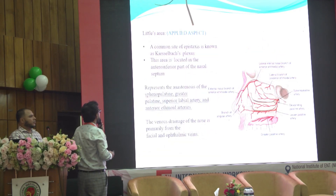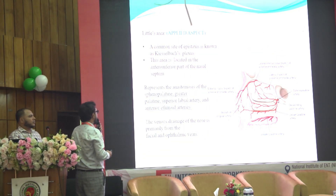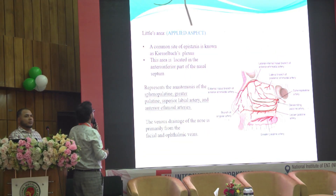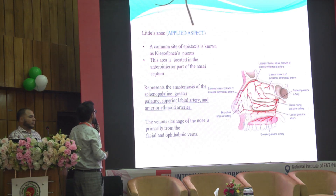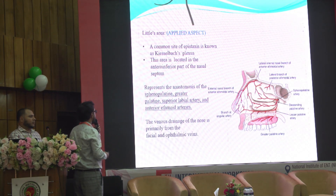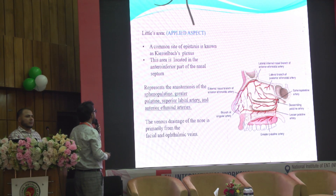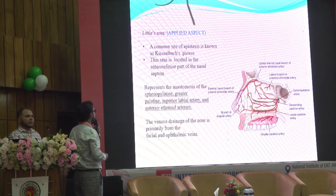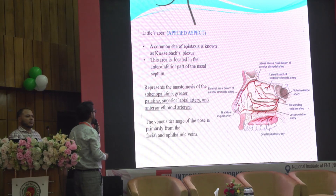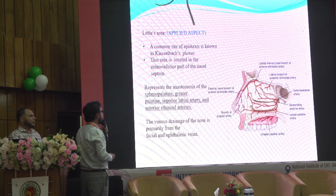The internal blood supply of the nose forms Kiesselbach's plexus in the septum, consisting of the sphenopalatine, greater palatine, superior labial, and anterior ethmoidal arteries.